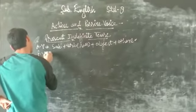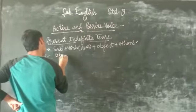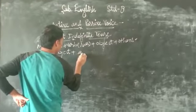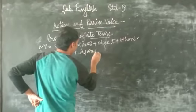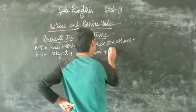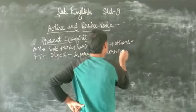In passive voice, we first of all write the object. After writing the object, is, are, or am is used as helping verb. And after that, third form.